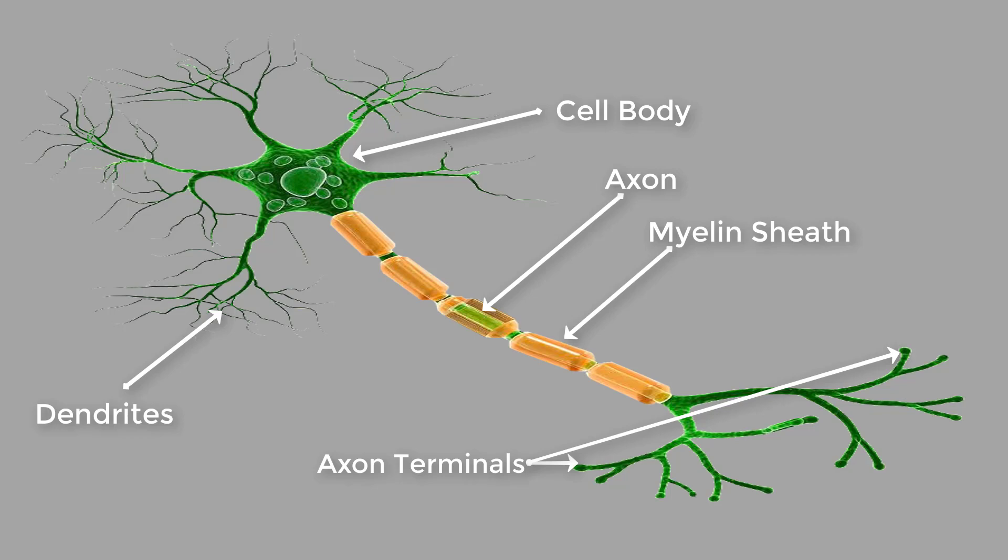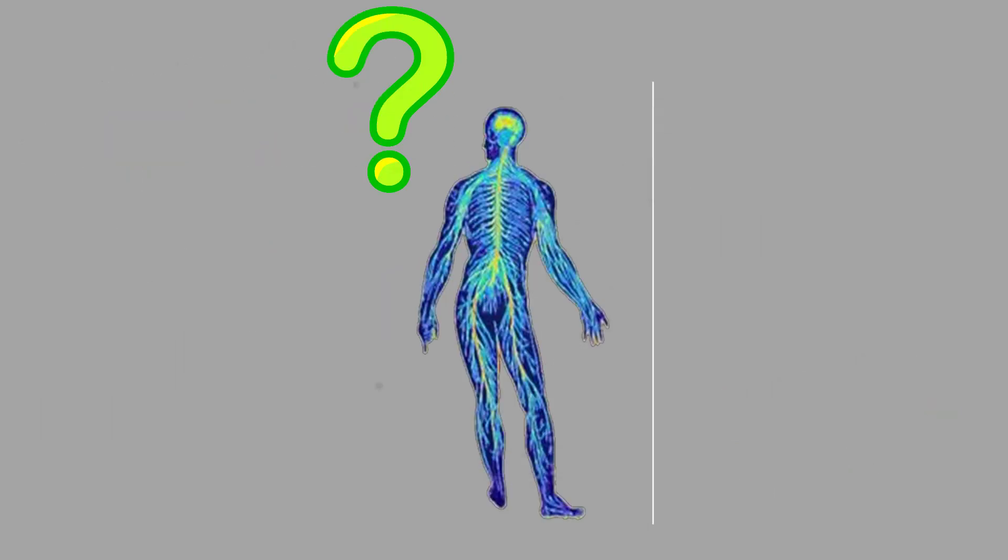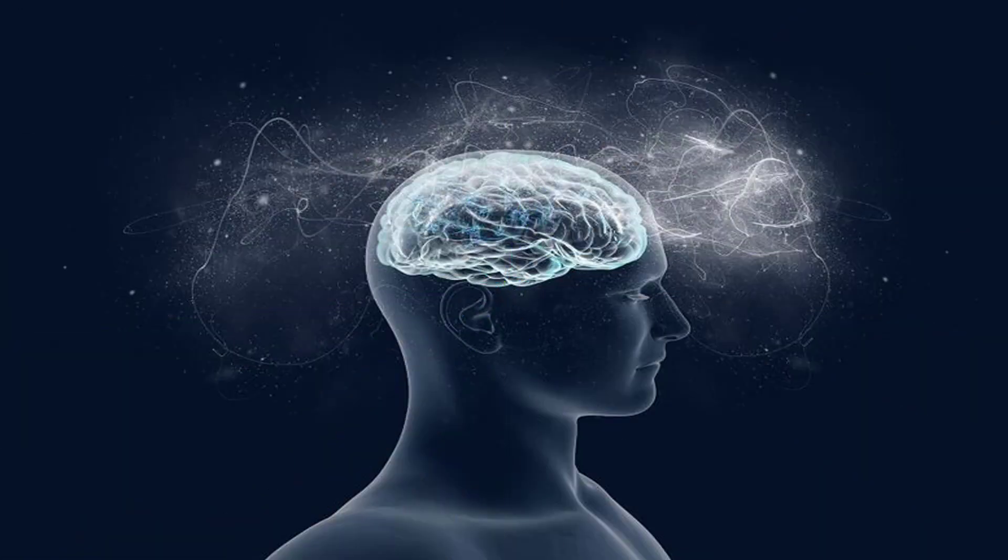Now that we have understood about the basic structure of a neuron, how about you take a guess on how many neurons you have? As we humans are considered to be the most intelligent species on this planet, let us study about the number of neurons present in the human body.